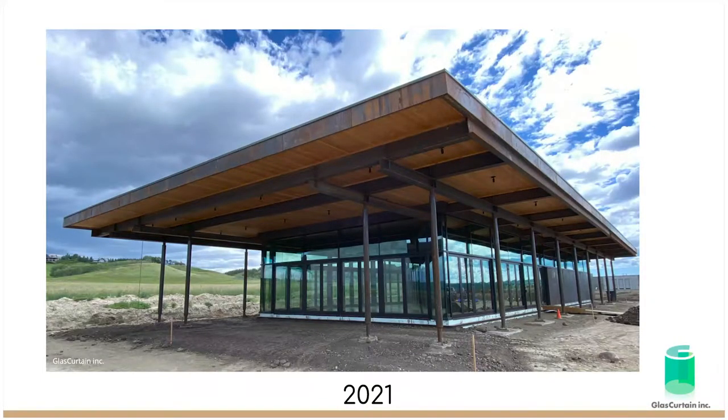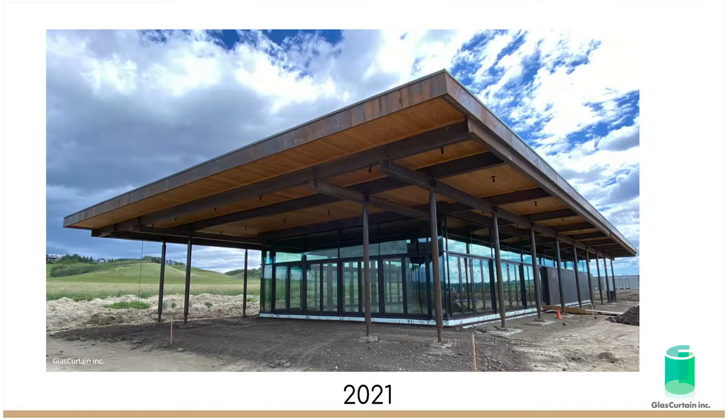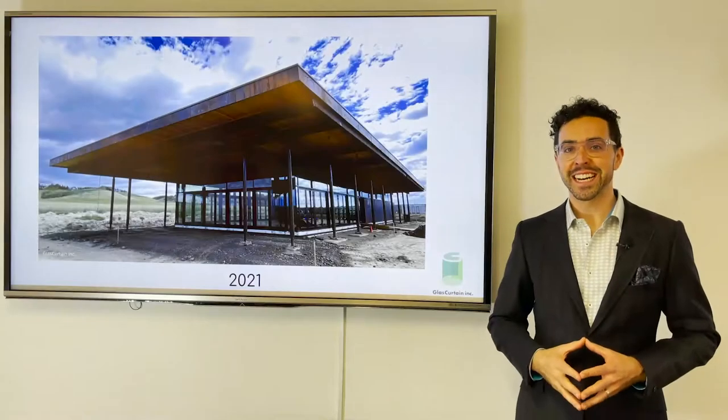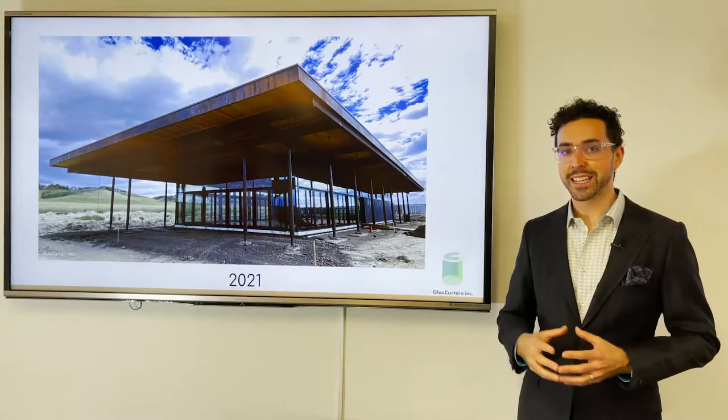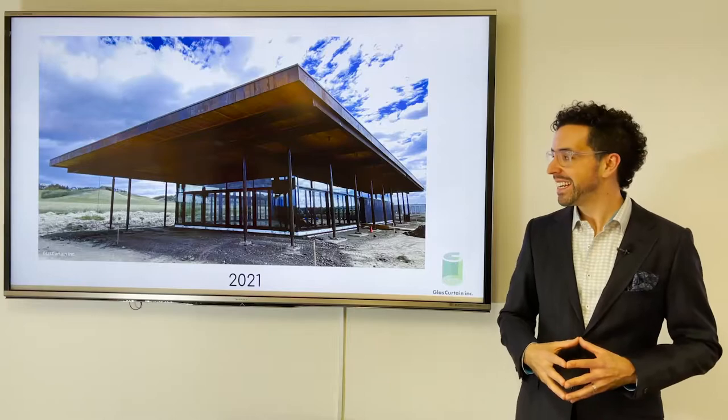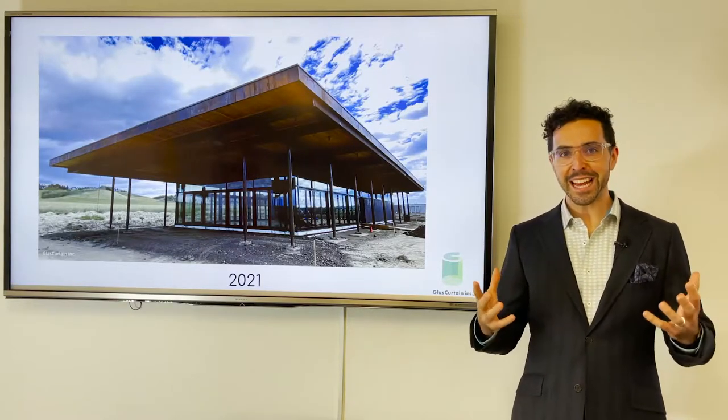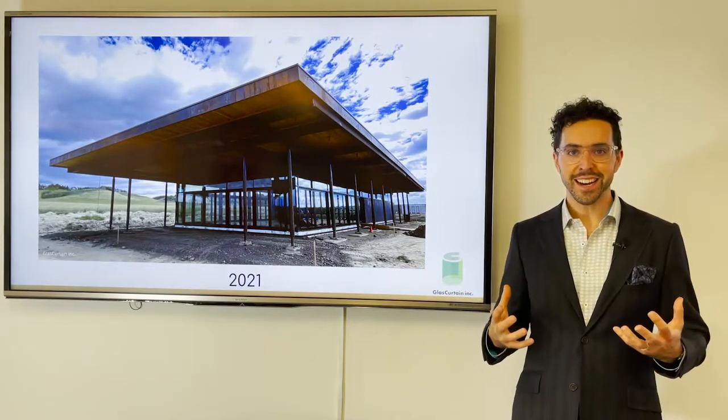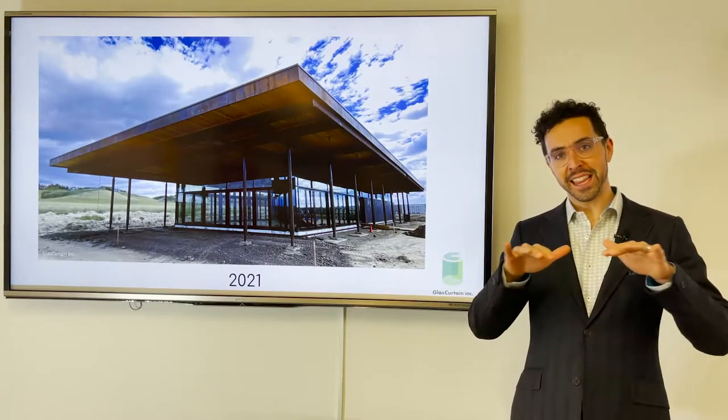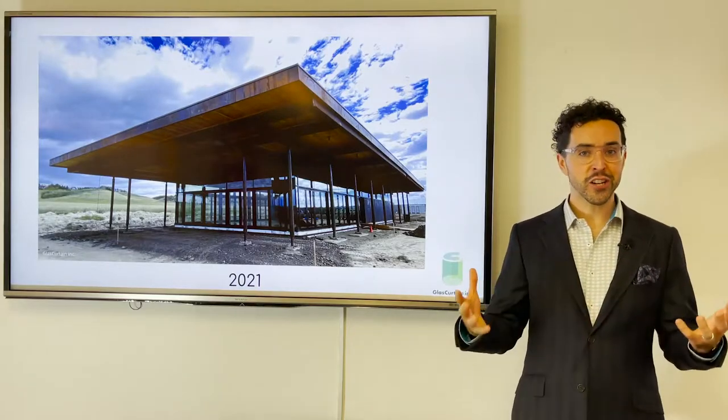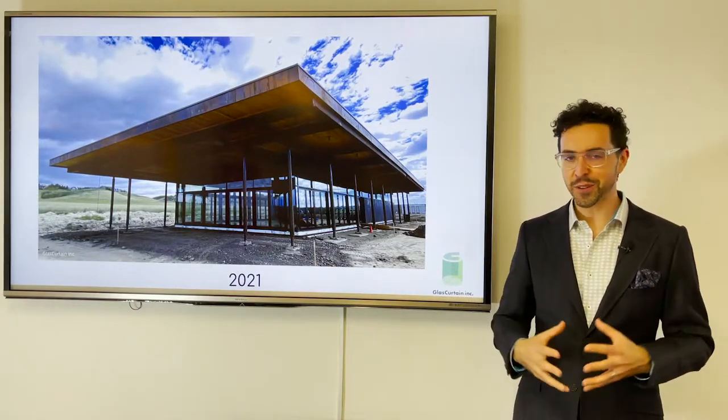And when we fast forward from 2011 to 2021, we see this project here of ours. This is the Haskane Legacy Center designed by Nyhoff Architects. This project is located in Calgary, Alberta. And you can see here again, that very beautiful Miesian sort of aesthetic, while we also have again, a very high performance design. The large overhangs also providing shading for passive cooling effects.